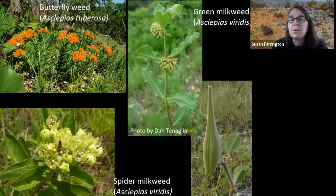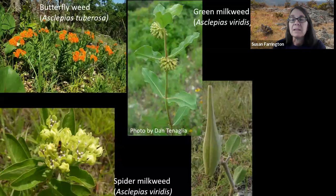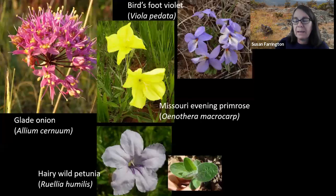Several milkweeds occur on glades. Butterfly milkweed blooms in June, and spider milkweed blooms in May. Green milkweed is highly variable in leaf width and is more specialized to glades versus other habitats. It blooms later than most other milkweeds, typically in July. Glade onion, Missouri evening primrose, bird's foot violet, and hairy wild petunia are all found on dolomite glades.